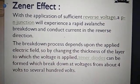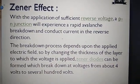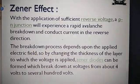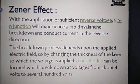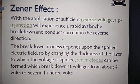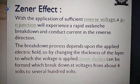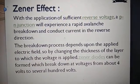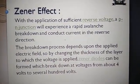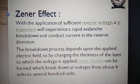The breakdown process depends upon the applied electric field. By changing the thickness of the layer to which the voltage is applied, Zener diodes can be formed which break down at voltages from about 4 volts to several hundred volts. That is why Zener diodes are available as 6.2V, 6.7V, 12V, 14V, 16V — from which we can get a regulated output using a Zener voltage regulator.